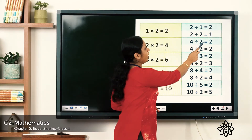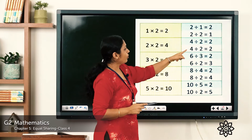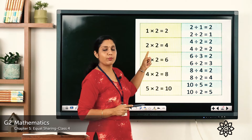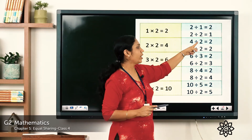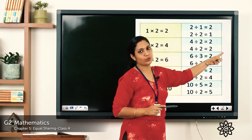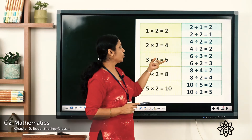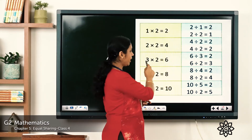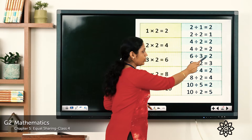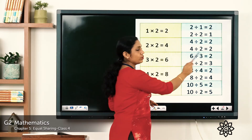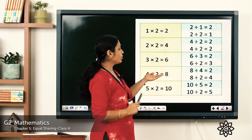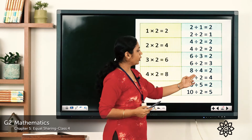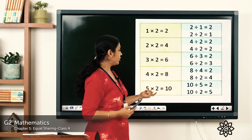4 divided by 2 is equal to 2. Here we have 2 twos — both numbers are 2 — so 4 divided by 2 is equal to 2. For 3 into 2 is equal to 6: 6 divided by 2 is equal to 3. For 4 twos are 8: 8 divided by 4 is equal to 2, and 8 divided by 2 is equal to 4.